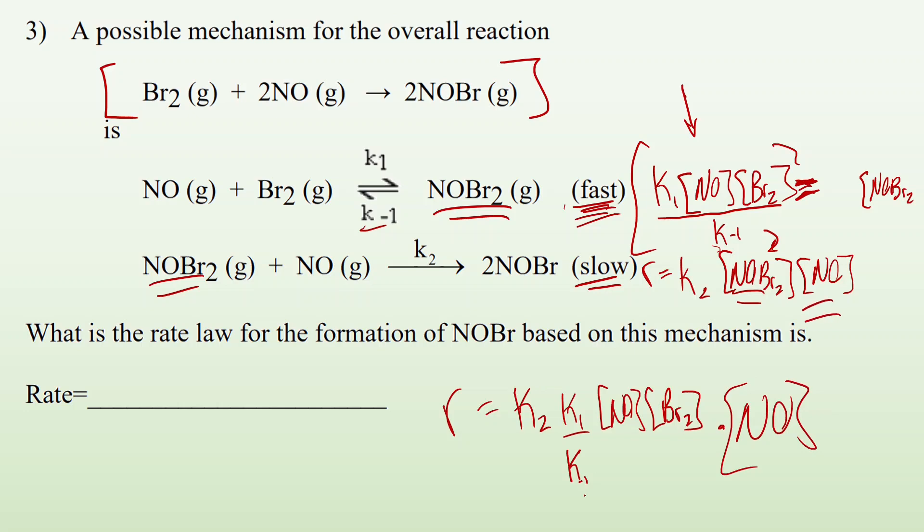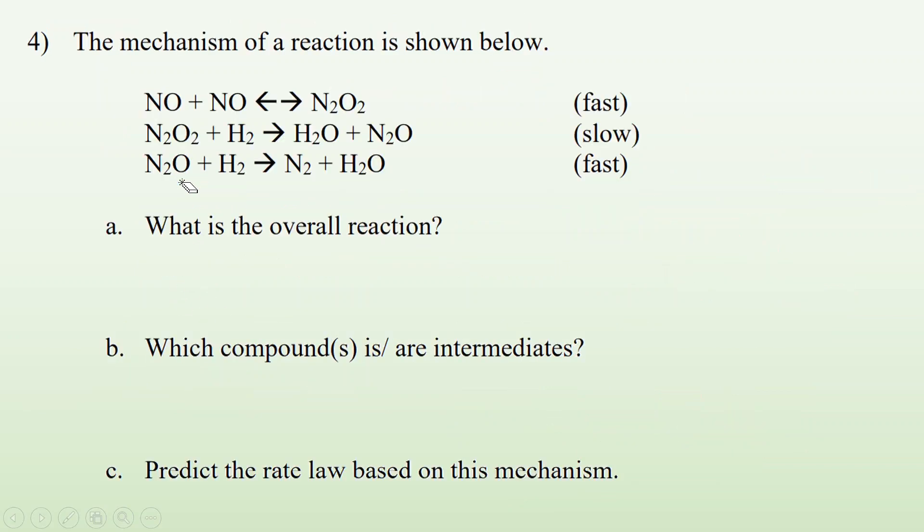So now I can substitute this in to that equation. I get my rate equals K2 times NOBr2, I'm saying, is this whole thing. So times K1 times NO times Br2 divided by K to the minus one times by NO. Now, these K's are all just numbers. So when you multiply them all together, you get just some number K. We got NO times Br2 times NO. So the NO is going to end up to the second power squared times Br2 to the first power. So because we had this intermediate in our first fast step, we had to use it to get rid of the intermediate in our slow second step. You can't have intermediates in your rate law.